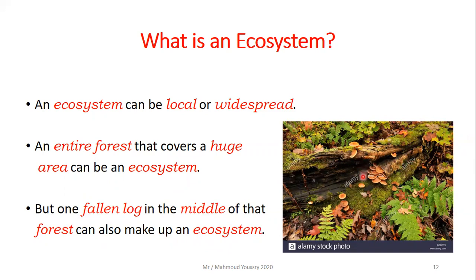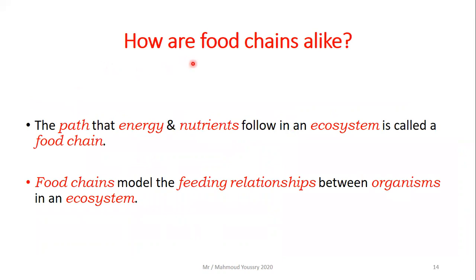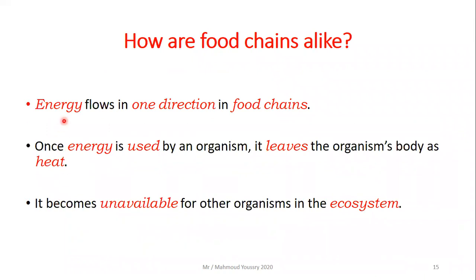Now, how are food chains alike? The path that energy and nutrients follow in an ecosystem is called a food chain. Food chains model the feeding relationships between organisms in an ecosystem. Energy flows in one direction in a food chain, from one organism to another. Once the energy is used by an organism, it leaves as heat and becomes unavailable to other organisms.